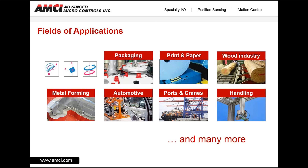There are many applications and industries where absolute encoders can be used. In packaging, they're often used on labeling equipment or for machine timing. In the print and paper industry, for registration control or locating printing heads and rollers. In the wood industry, multi-turn encoders are used for positioning saw blades for accurate cutting. For metal forming and automotive, encoders and resolvers are used for measuring shut height control or crankshaft position. At ports and cranes, multi-turn encoders are used for positioning cranes to unload equipment safely. And in material handling, where XY position is essential.